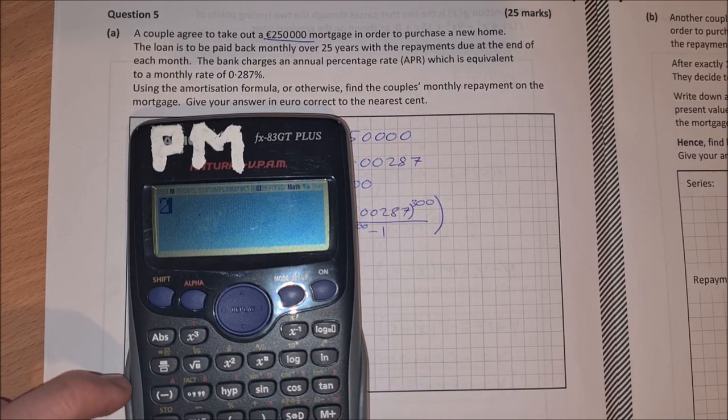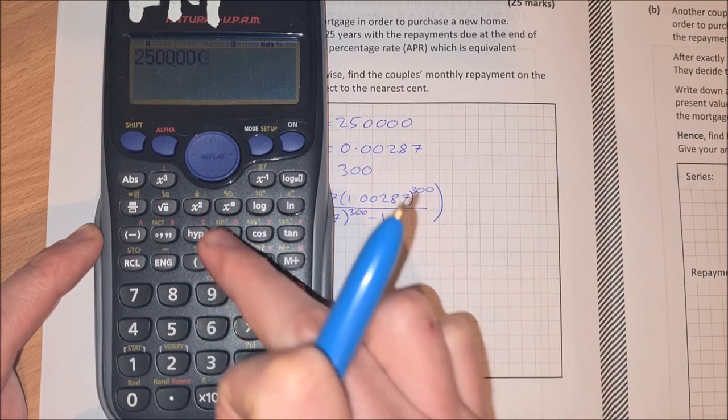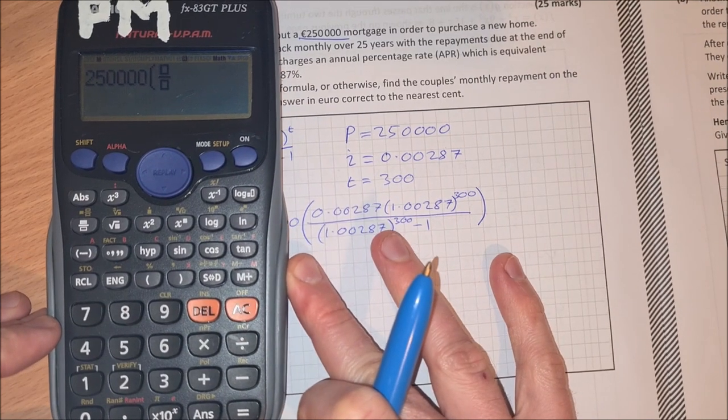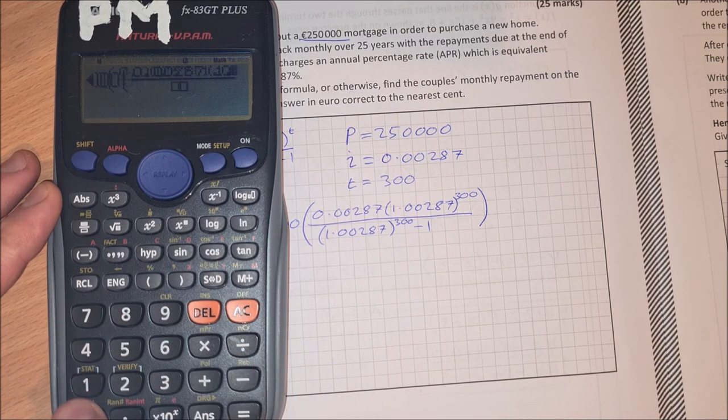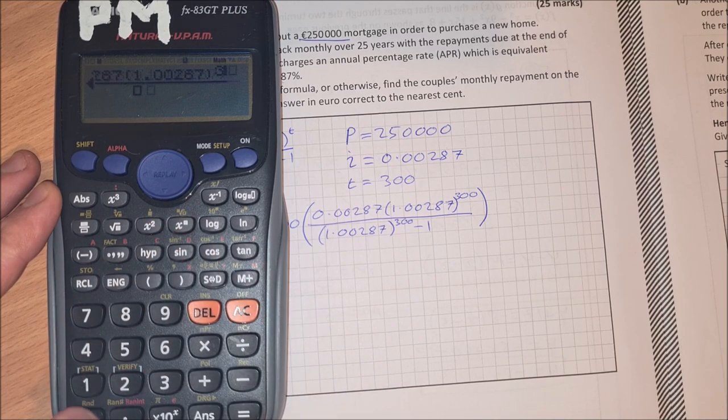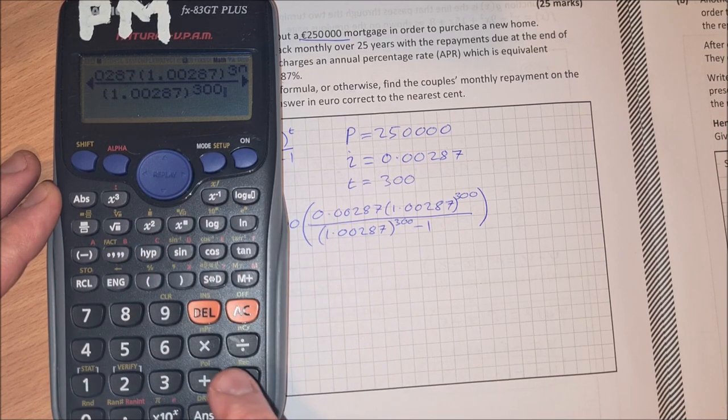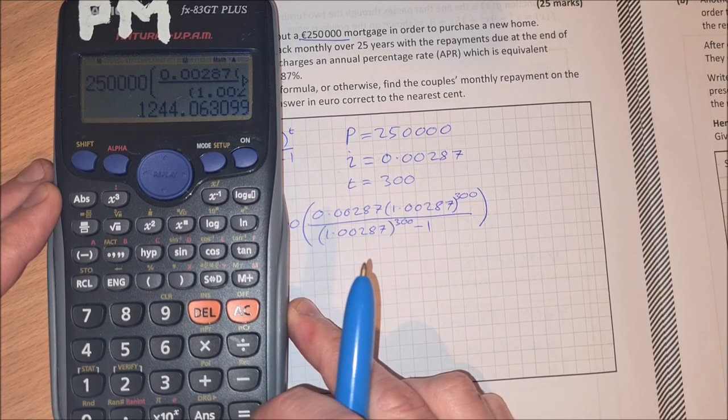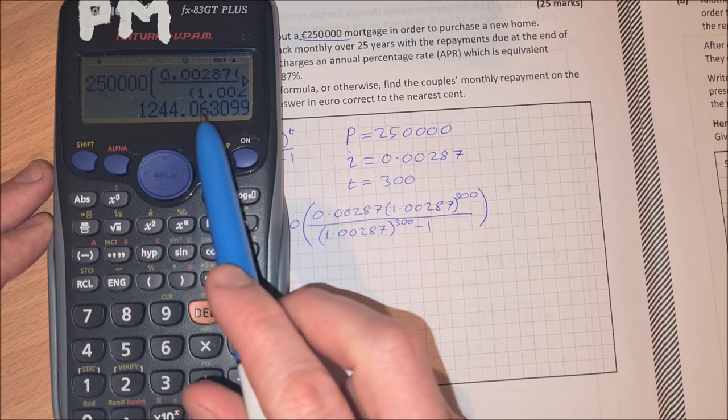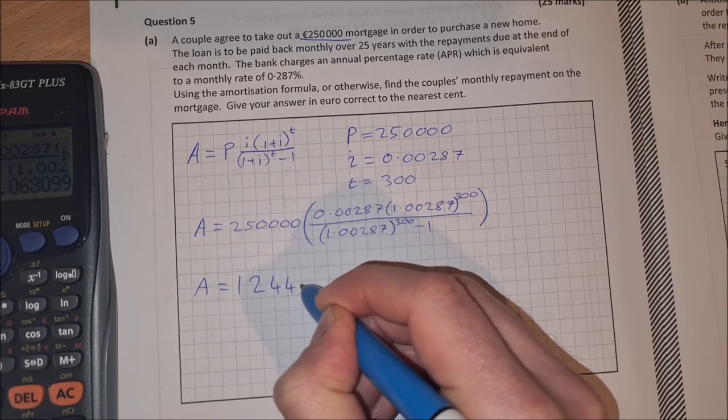So you can pop that into your calculator. I'll do it for you here just because it can be an awkward thing to put into the calculator. So I'd start by going 250,000, open up a bracket then. And we have a fraction. So we have 0.00287 times 1.00287, that one is to the power of 300. Then down to the bottom of the fraction, we have 1.00287 to the power of 300, and it's minus 1. And then close the bracket there. And hopefully we typed it all in right. And we did. We get 1,244.066 cents. So the amount repayable is 1,244 euros and 6 cents.